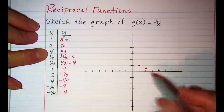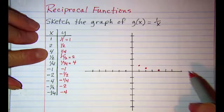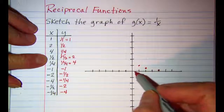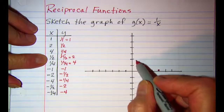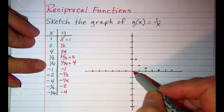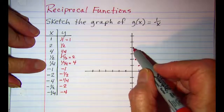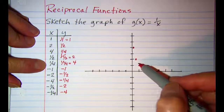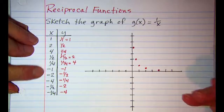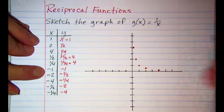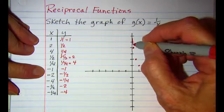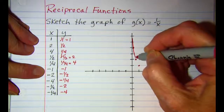You can see that we're getting closer and closer to the x-axis. When x is one half we have two. When x is one fourth we have four, and now we're getting closer and closer to the y-axis. So our curve on this side is going to look like this.